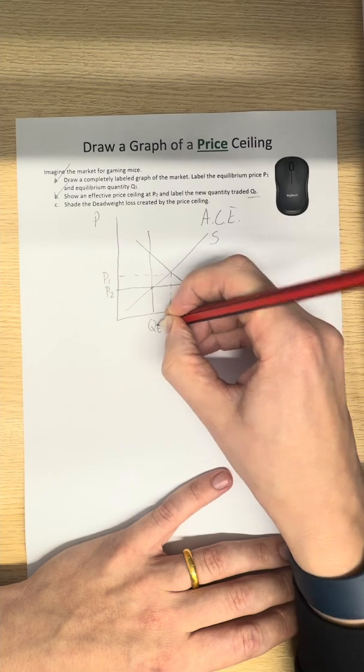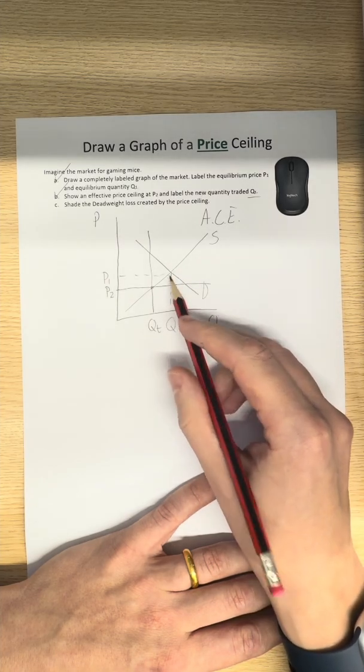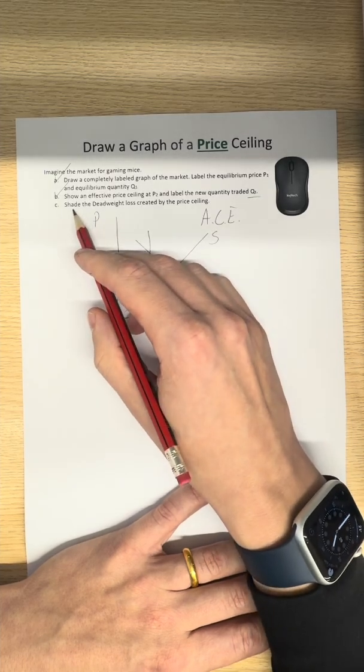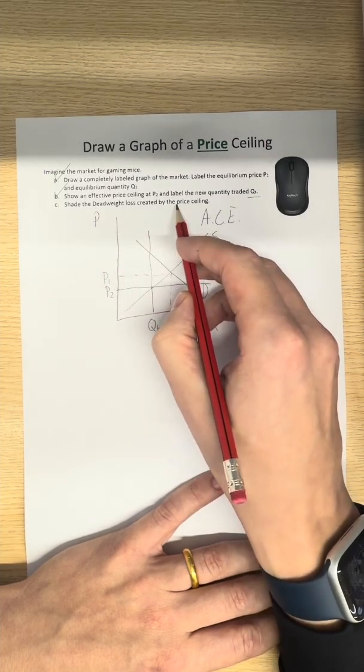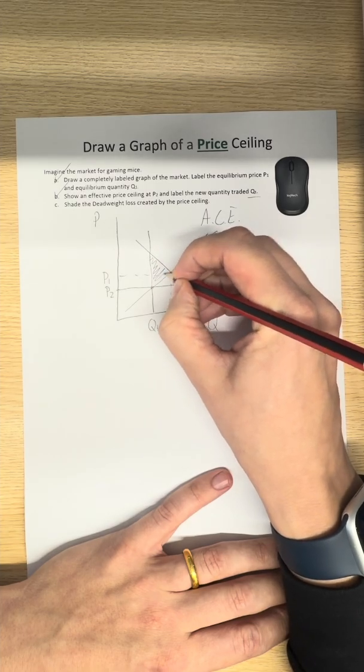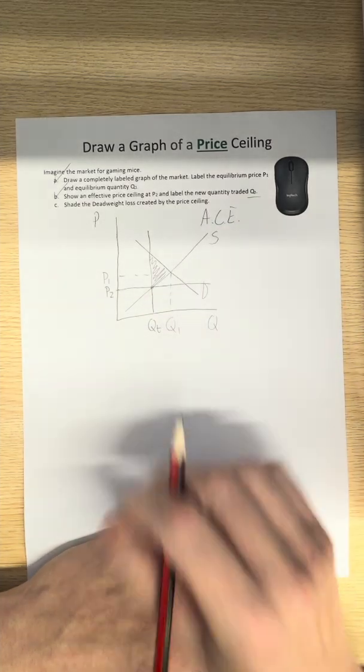This price ceiling is reducing the quantity from the equilibrium of Q1 down to QT. So, when it asks us, shade the deadweight loss created by the price ceiling, that is this area here that has been cut off by the reduced quantity.